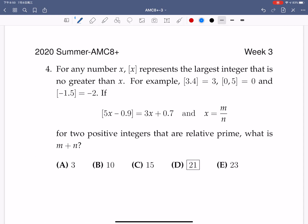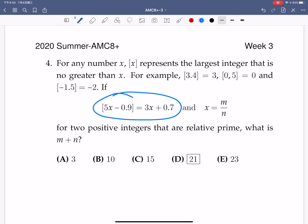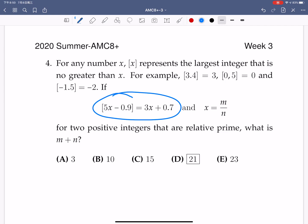Problem number four. For any number of x, bracket x represents the largest integer that is no greater than x. So solve this equation. How to solve this equation? So we use the property that 5x minus 0.9 integer part is going to be less than or equal to 5x minus 0.9. But at the same time, it would be bigger than or equal to 5x minus 0.9 minus 1. That follows from the definition of the bracket x.